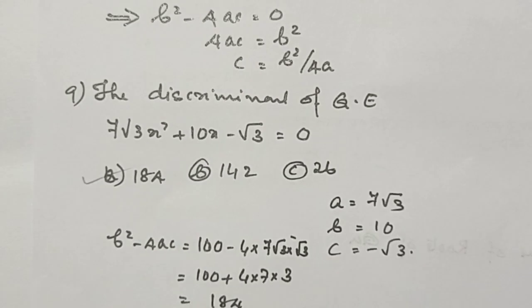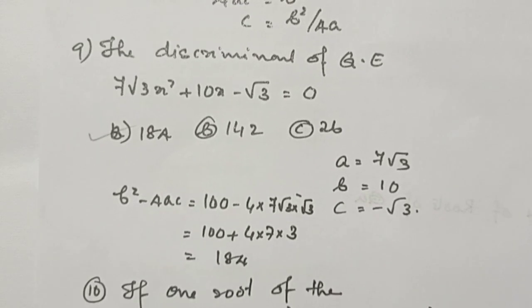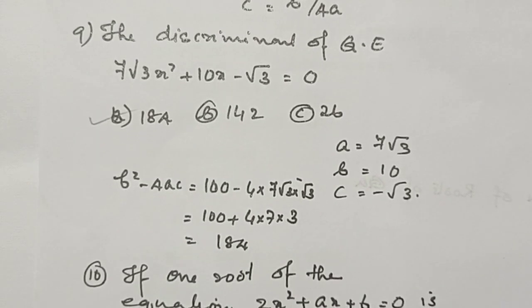Next, the discriminant of the quadratic equation 7 root 3 x squared plus 10x minus root 3 equals 0. We have to find the value of the discriminant, that is b squared minus 4ac. The answer is 184.